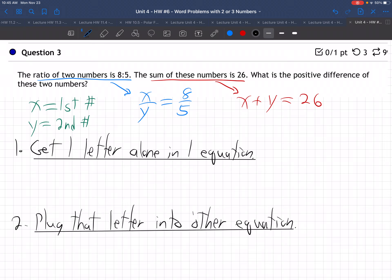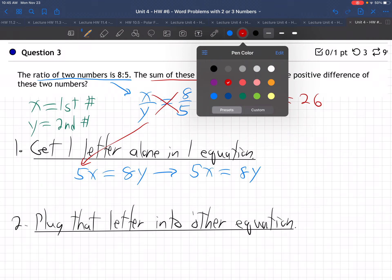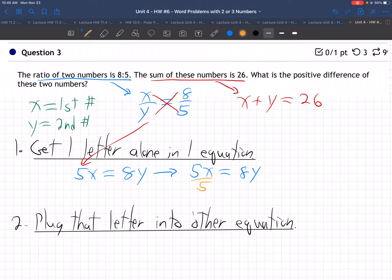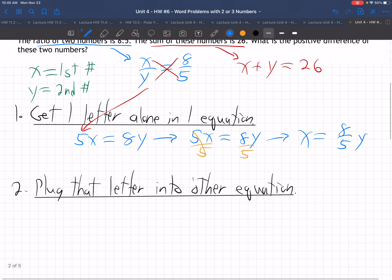Let's grab this first equation. I'm going to cross multiply - that's what we do when we have equal fractions, right? 5x is 8y. Now I want to get one of those letters alone. I take 5x equals 8y and divide both sides by 5. That means that x is 8 fifths y. We got one letter alone in one equation.